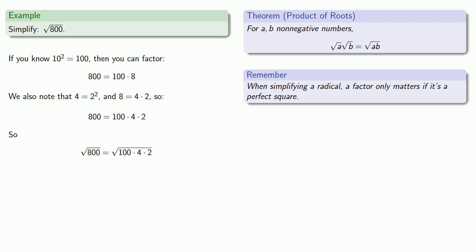Because this is the square root of a product, we can rewrite it as the product of the square roots. Because we know 10 squared equals 100, then the square root of 100 is 10. Because we know that 4 is 2 squared, we know the square root of 4 is 2. And square root of 2 was there, and it's still there.